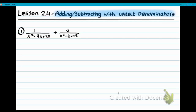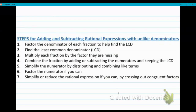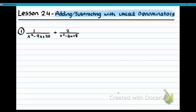Hi everyone. We're going to be going over lesson 2.4, which is adding and subtracting with unlike denominators. I'm going to put the steps up, so if you want to take a picture with your phone or if you ever need the steps, you can come back to this section of the video. So our first step is factoring the denominators if we can, which we can in this case. We would factor them both by the AM method because they're both trinomials with a leading coefficient of one.